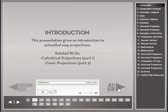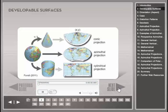This presentation builds upon concepts introduced in the cylindrical and conic projection presentations, which are the first two parts of the map projection RLO series. This RLO presentation explores azimuthal map projections in greater detail. There are three primary developable surfaces for projecting the spherical Earth's surface on a two-dimensional map plane: a cone, a flat plane, or a cylinder. This presentation focuses on the family of azimuthal projections, which maps the Earth's surface onto a flat plane.